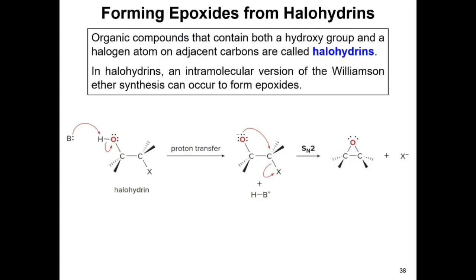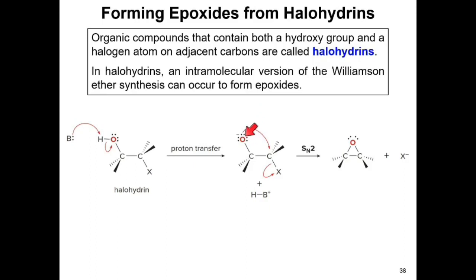Epoxides can be synthesized via a series of organic reactions involving halohydrins — organic compounds containing both a hydroxy group and a halogen atom. The halohydrin undergoes a proton transfer reaction followed by an SN2 reaction to generate the epoxide. A strong base deprotonates the hydroxy group, forming a negatively charged oxygen that acts as a nucleophile and attacks the electron-deficient carbon atom, resulting in cleavage of the carbon-halogen bond and formation of the epoxide.